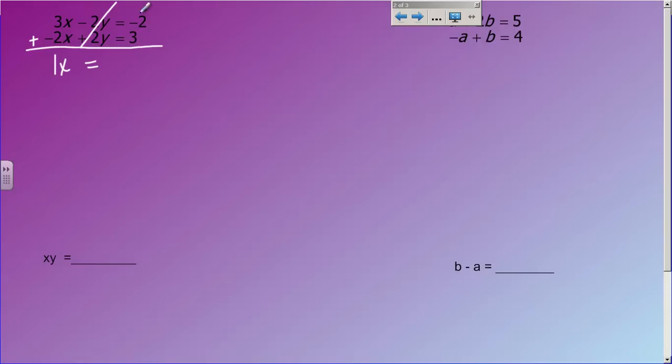Then I'm going to add the rest of this, so I have negative 2 plus 3, which also equals 1. And so when I solve this problem, I divide both sides by 1, I end up with x equals 1.